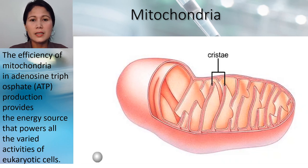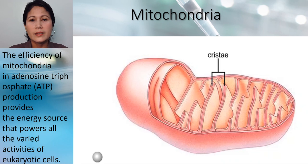The efficiency of the mitochondria in adenosine triphosphate or ATP production provides the energy source that powers all the varied activities occurring in eukaryotic cells. For this reason, mitochondria is usually called the powerhouse of the cell.